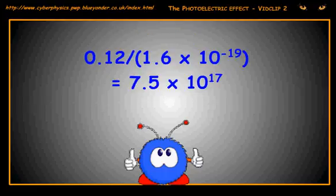We therefore have to divide by the charge on each electron. So dividing 0.12 by 1.6 times 10 to the minus 19, we get 7.5 times 10 to the 17.